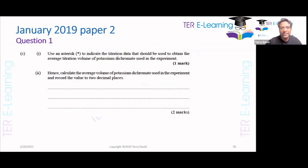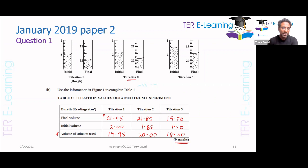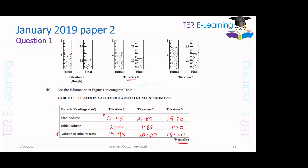They said: using an asterisk, indicate the titration data that should be used to obtain the average titration volume of the potassium dichromate. When you do a titration, the first titration is what we call our rough — just to gauge where the endpoint is. You're going to have to select which data to use. We got 19.95, 20.00, and 18.00. Which set of data am I going to use to find my average value? 19.95 and 20.00.